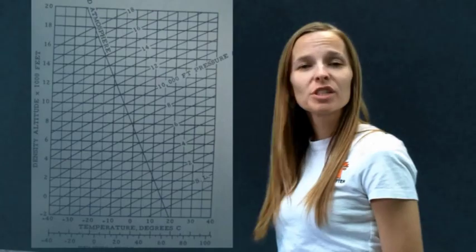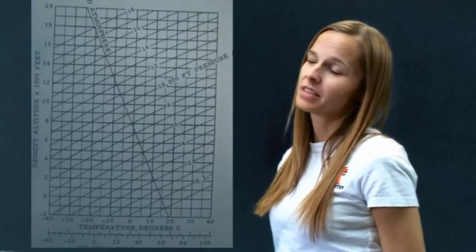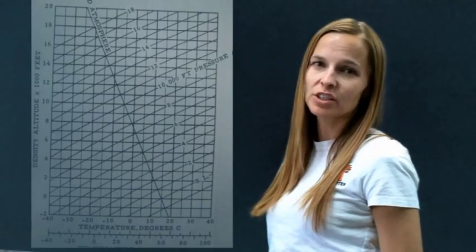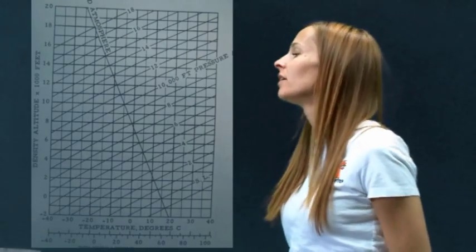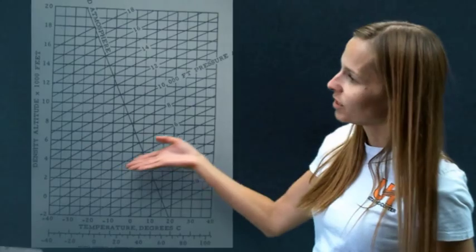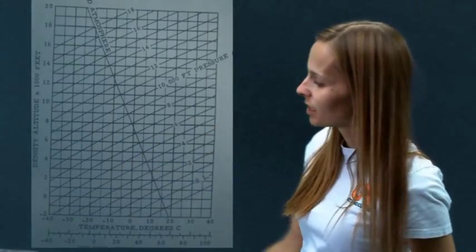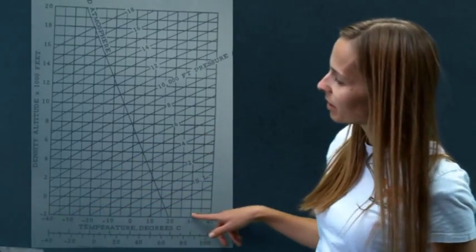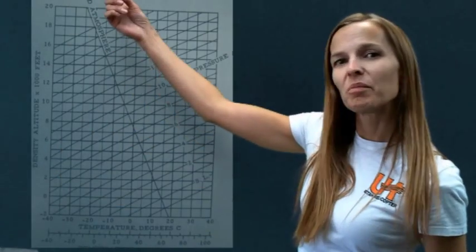So what is density altitude? Okay, density altitude is pressure altitude corrected for nonstandard temperature. This would be nonstandard temperature. All right, so density altitude is pressure altitude adjusted for nonstandard temperature. If we look at this chart here, we can see pressure altitude is plotted here on these diagonal lines. And as our temperature goes up, our density altitude goes up.